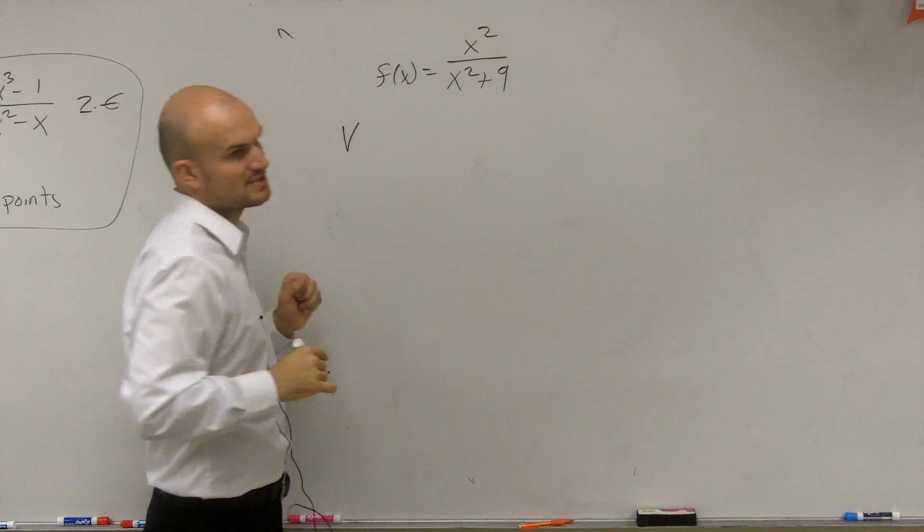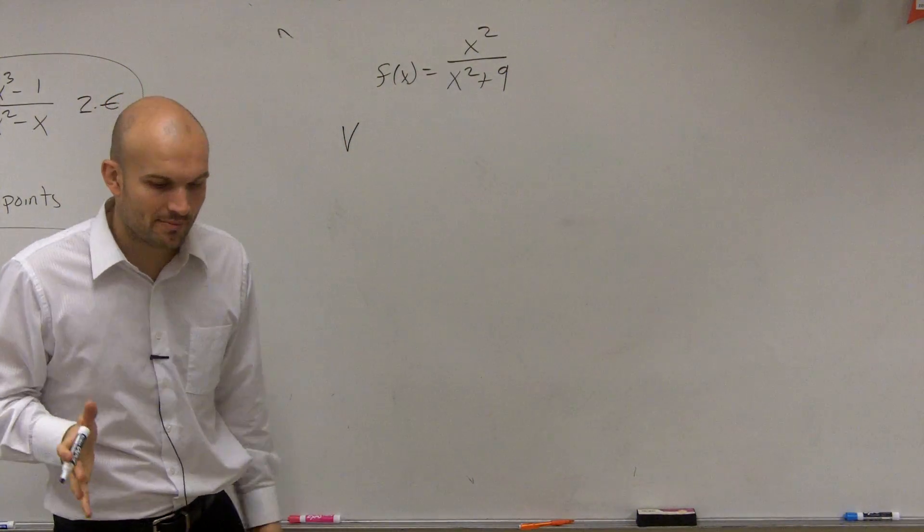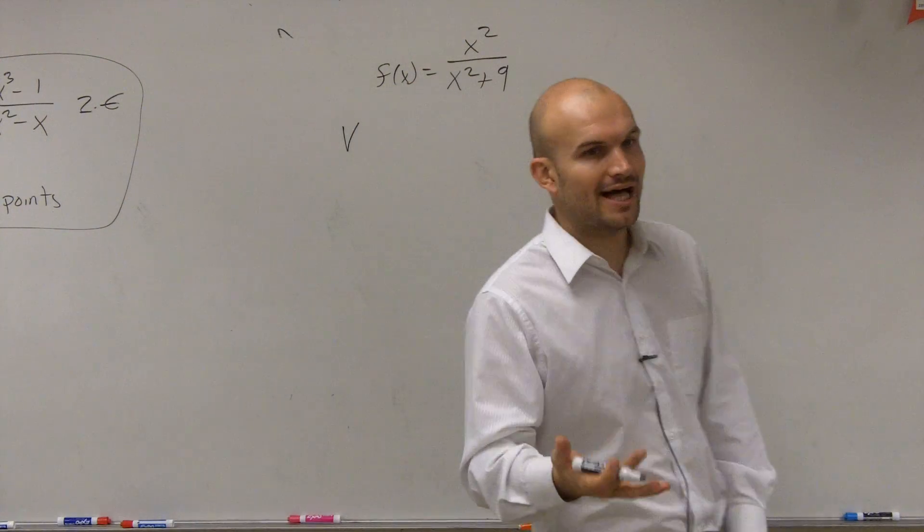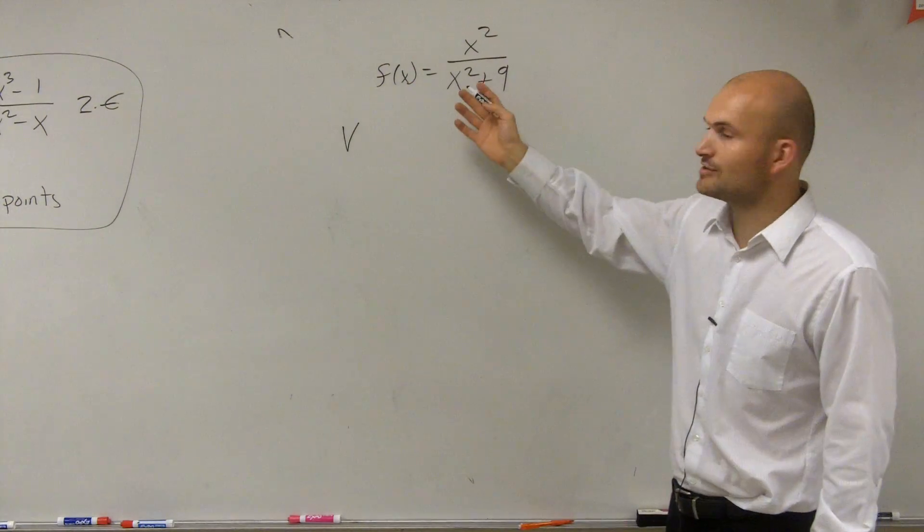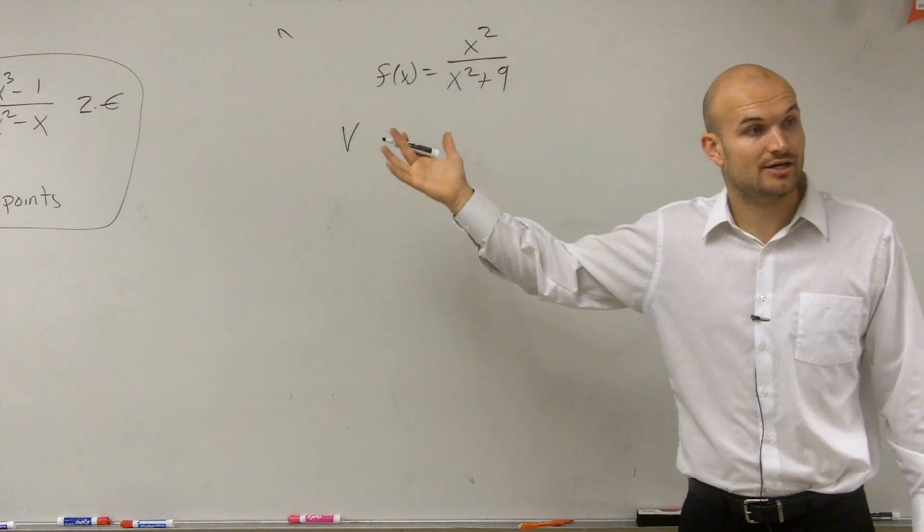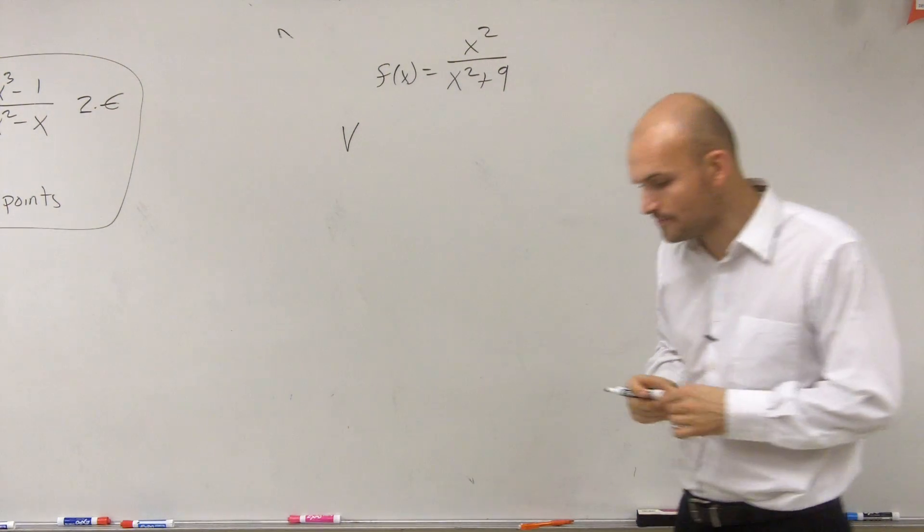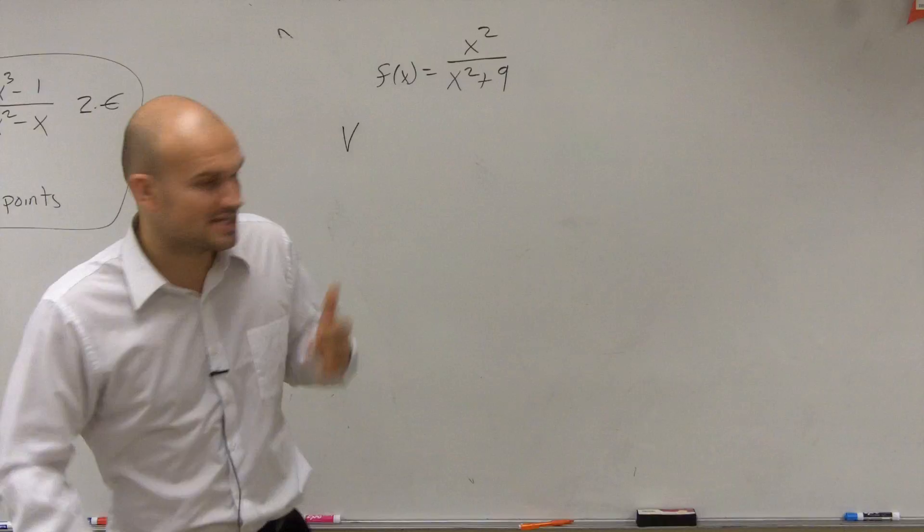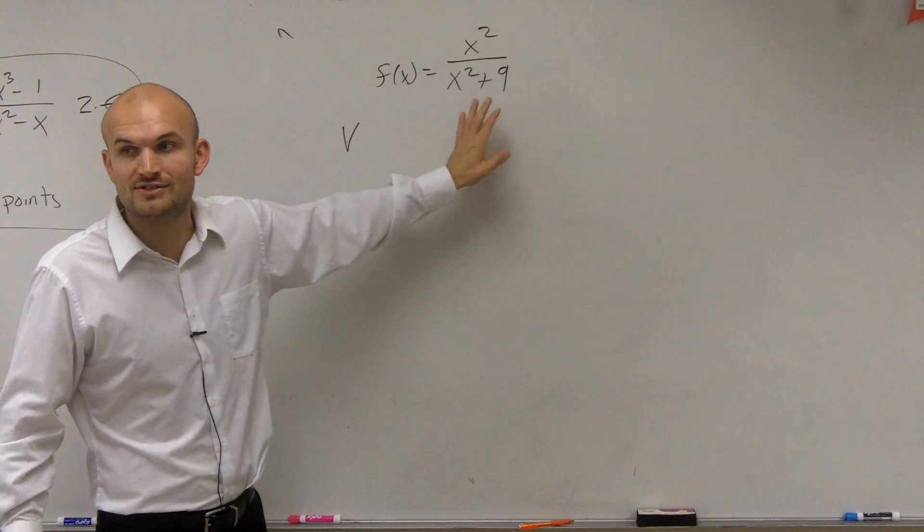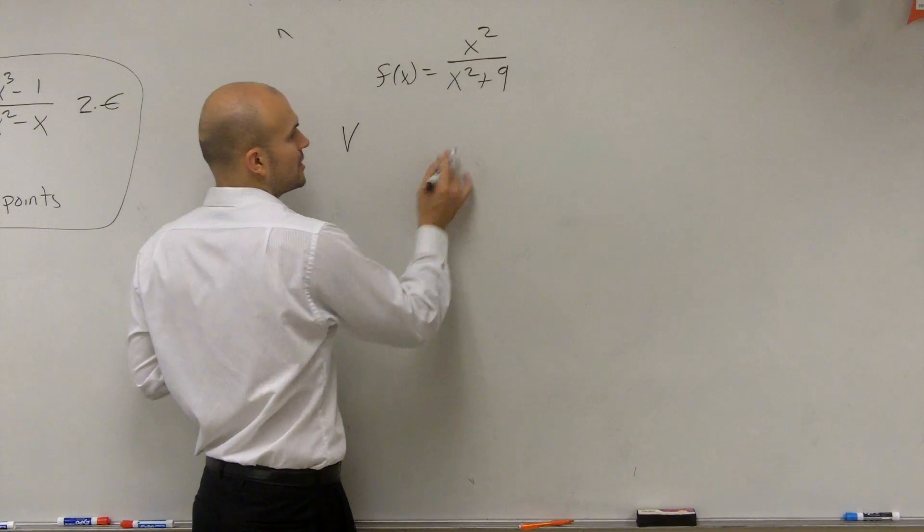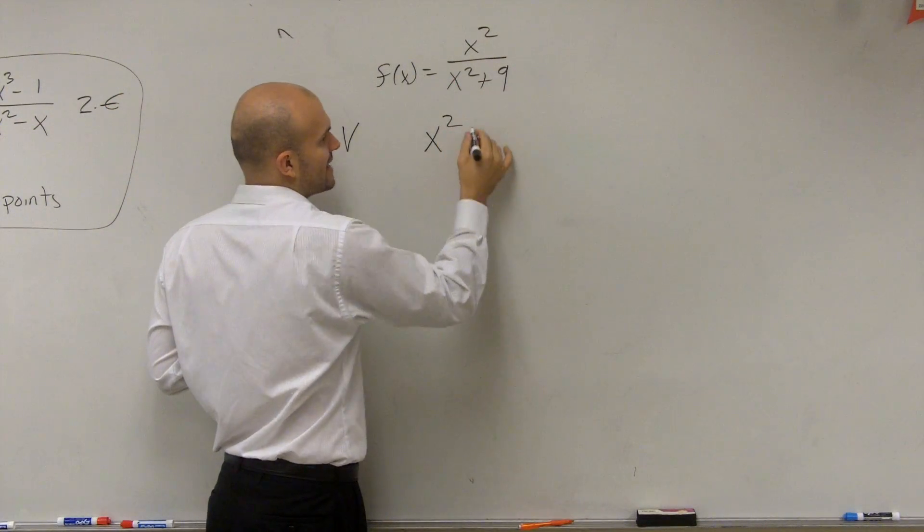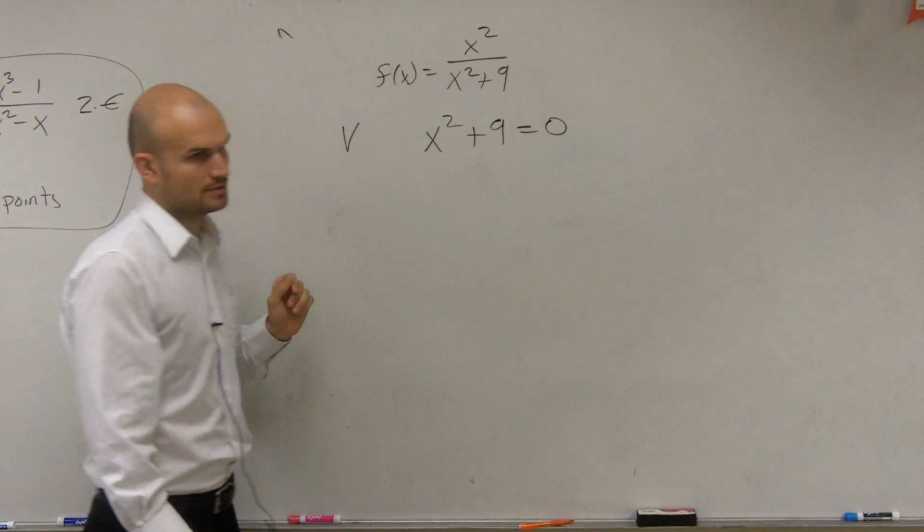So the vertical asymptote, I'm just going to represent with V. The vertical asymptote, remember, is going to be all the values of your variable that make your denominator equal to 0. Because remember, we can't divide by 0, OK, Marco? And so since we can't divide by 0, we need to find the values that are going to make our denominator 0. So what I do is I take my denominator, say x squared plus 9 equals 0.